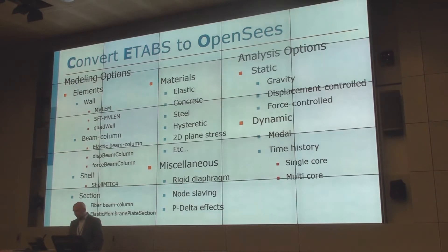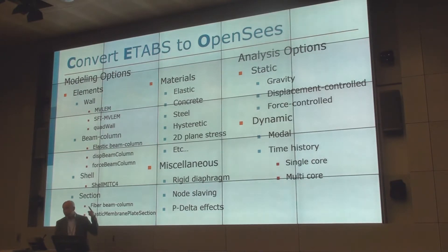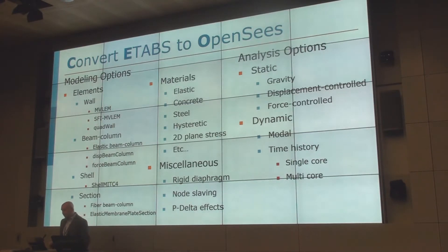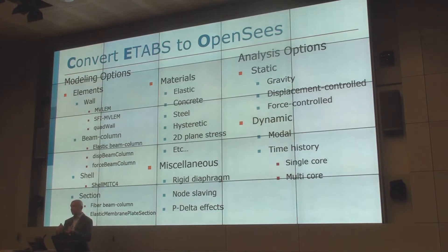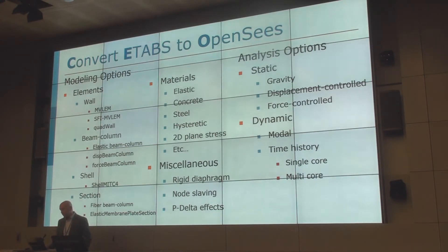This tool currently supports all the models you saw earlier — the MVLEM, the shear-flexure interaction model for walls, and the finite element model — but we also added popular beam column elements, fiber models, elastic elements, and shell elements. I tried to add everything you would need to model a building: if you want to model a slab, a wall, a beam, any of those components, that's all implemented there.